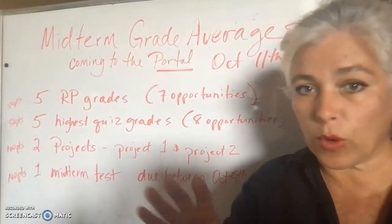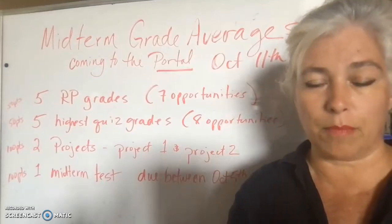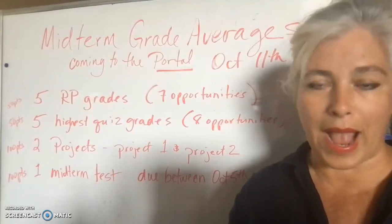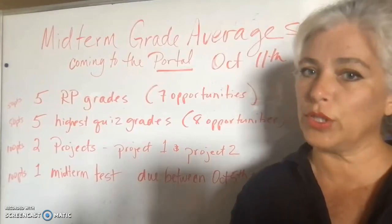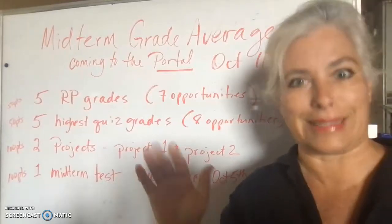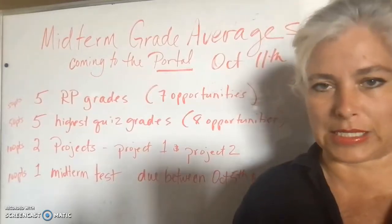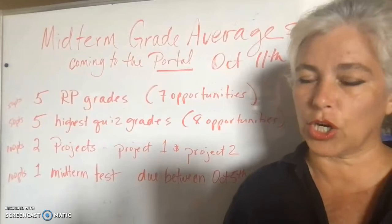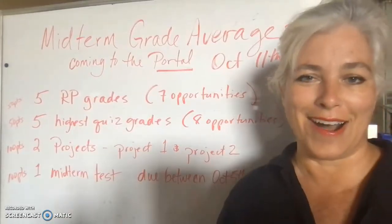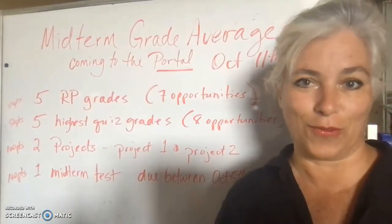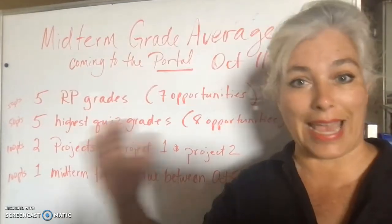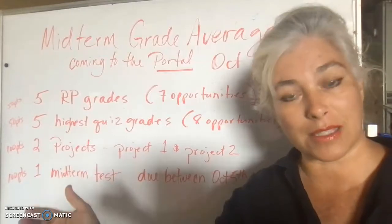If you haven't begun your reaction papers yet, begin them now so you can at least have a chance at earning 40 out of 50 points averaged into your midterm. And if you only have 40 out of 50 by midterm, you'll still have eight or nine more reaction paper opportunities after midterm to earn the remainder you need for a perfect score for the semester.